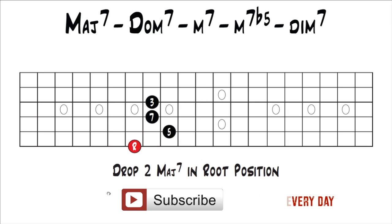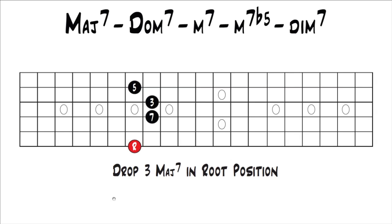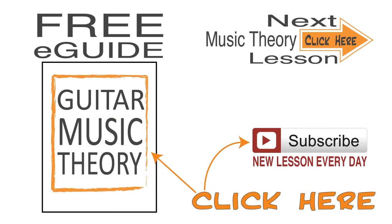That's the only difference between drop 2 and drop 3. With drop 2, you're not skipping any strings. With the drop 3 voicings I showed you, you're skipping one string each time. So if you're learning these, you could just start with a drop 2 or a drop 3, learn them really well, and then you can go back and forth between them. It'll help you visualize these chords and probably help you memorize them quicker.